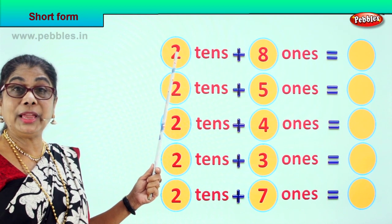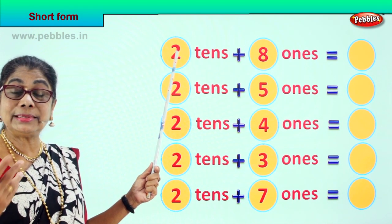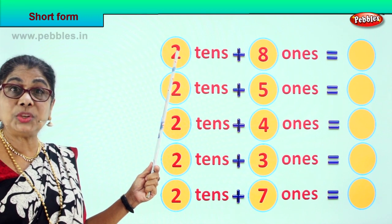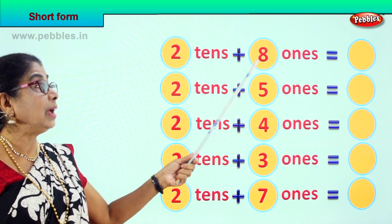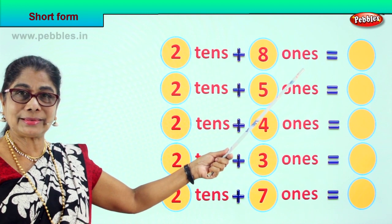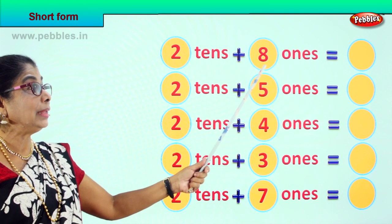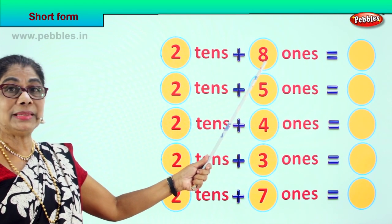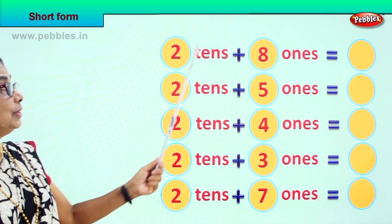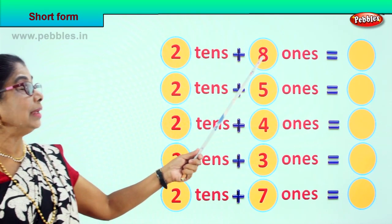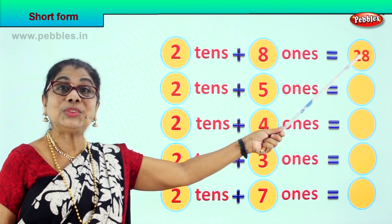Shall we take another exercise? See what we have here. Two tens — what is two tens? One ten is ten, two tens are twenty. So two tens plus eight ones equals twenty plus eight, which is 28.